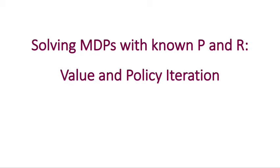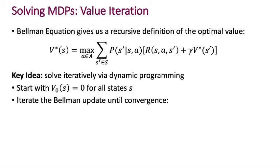Having seen Bellman equations, we are now at a place where we can look at our first algorithms for solving MDPs — meaning finding the optimal policies of MDPs when we do have the true transition probabilities and the true reward function. The Bellman equation gives us a definition of the optimal value function, and our very first algorithm, the value iteration algorithm, consists of converting this definition into an update rule.